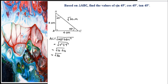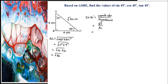Now proceed to compute sine 45 degrees. Sine 45 degrees is equal to the opposite side divided by the hypotenuse side of the right-angle triangle. Using the 45-degree angle as theta, BC is our opposite side. BC has a measurement of 4, and AC is the square root of 32.